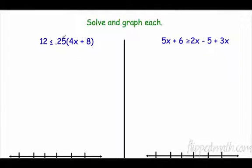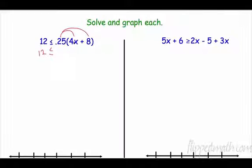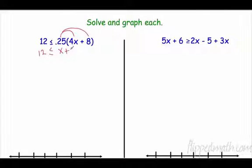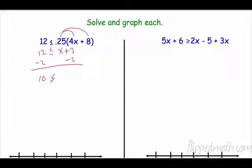This one is a multi-step problem with a decimal. I'm going to distribute 0.25. I'm not doing anything on the left side. So 0.25 times 4 is 1, giving me 1x, and 0.25 times 8 is 2, giving me plus 2. So: 12 ≤ x + 2. Now I subtract 2 from both sides, and 10 is less than or equal to x.